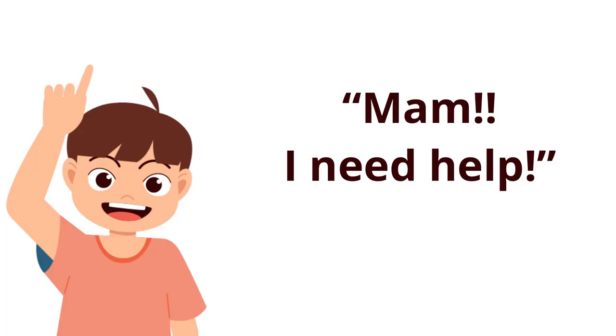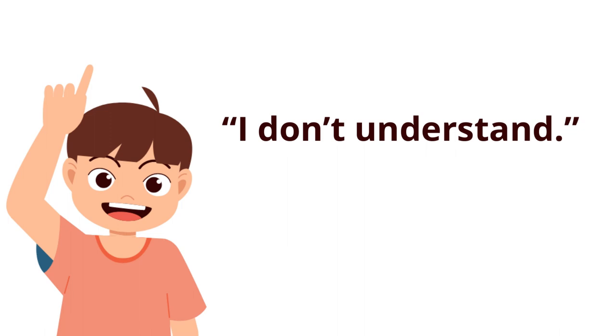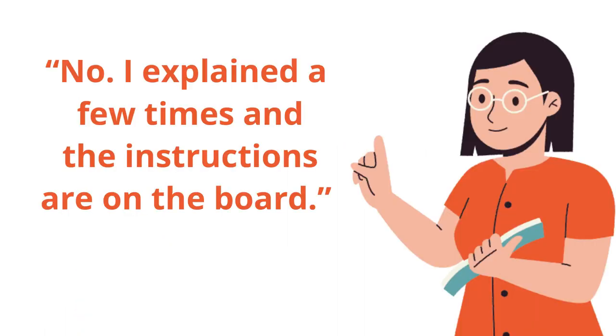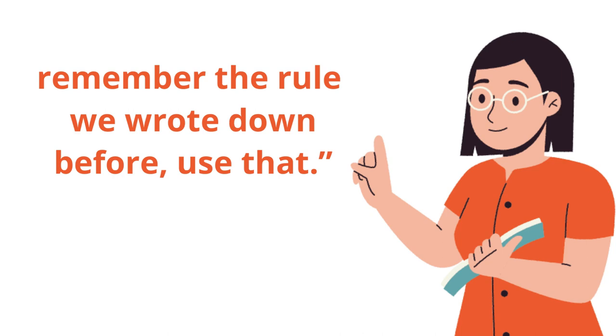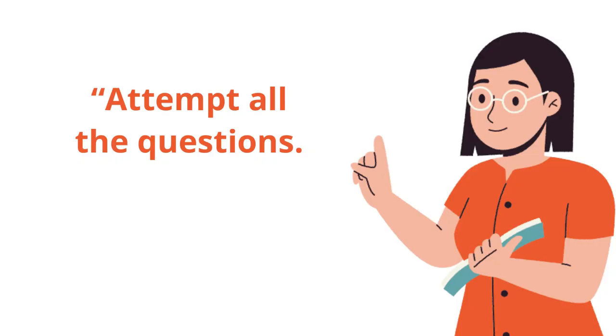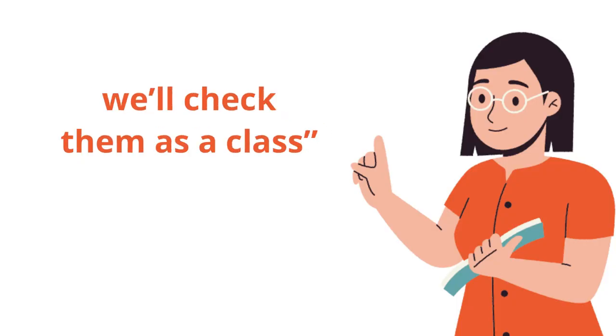Don't do that. Ask them where they are and what specifically they should do next. If you wrote down the instructions, they should know where they went wrong and continue from there. For example: 'Ma'am, I need help.' 'What's the matter, Jimmy?' 'I don't understand.' 'I explained a few times and the instructions are on the board — check where you are and what you might be stuck with. Go through number six again. Remember the rule we wrote down before — use that.' 'It's too difficult.' Help them solve one question, then tell them to continue on their own: 'Attempt all the questions once you're done and we'll check them as a class.'